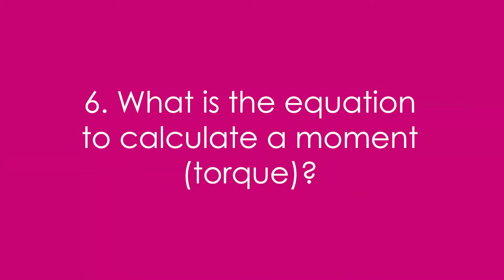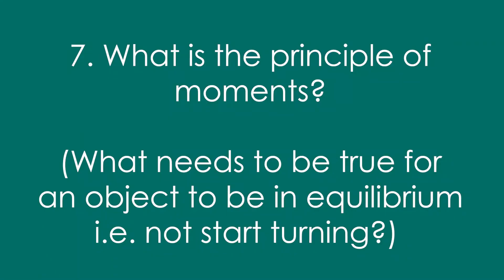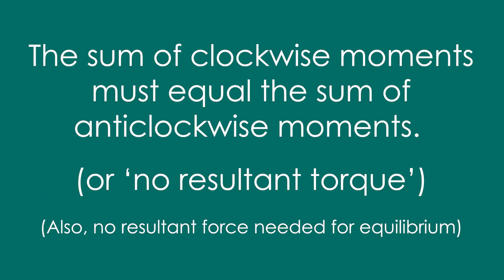Six, what is the equation to calculate a moment, also known as torque? A moment is equal to F times D, thus force times distance from the pivot. A-level people, don't forget that that distance has to be perpendicular to the force's line of action. Seven, what is the principle of moments? In other words, what needs to be true for an object to be in equilibrium. The sum of clockwise moments must equal the sum of the anti-clockwise moments. In other words, no resultant torque. Don't forget that there needs to be no resultant force as well for something to be in equilibrium.